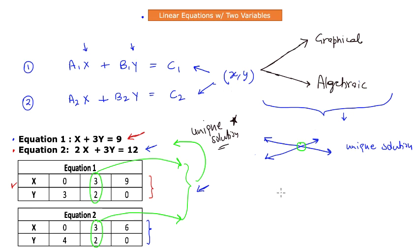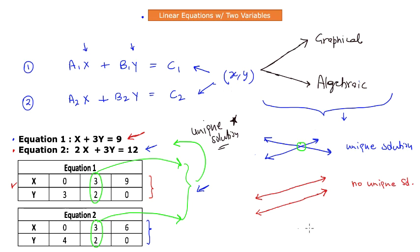The second case could be that you plot your first equation, and then the second equation that you plot becomes parallel to the first one. In those cases, you will say that there does not exist any unique solution — no unique solution. And the third case could be that you plot one of your equations and your second equation falls exactly onto the first equation, meaning they superimpose over each other. In those cases, you will say that there exist an infinite number of solutions.